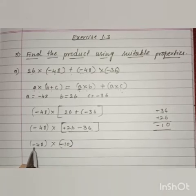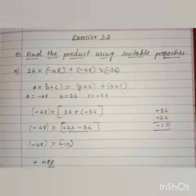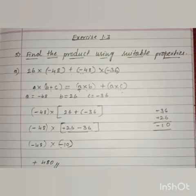Now, let us multiply minus 48 and minus 10. So, let us multiply signs minus into minus is plus 48 into 10. 48 tens are 480. Got it children?